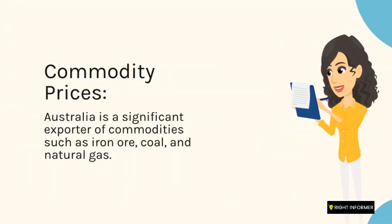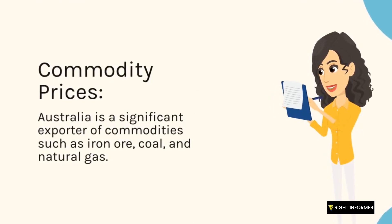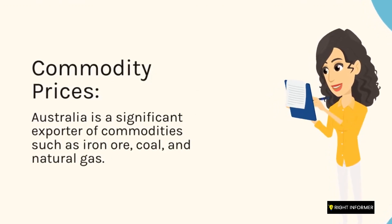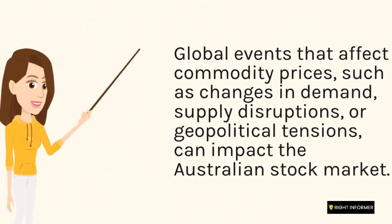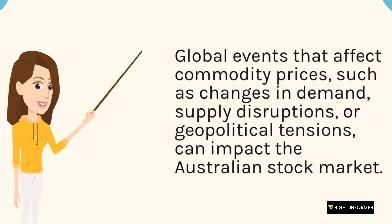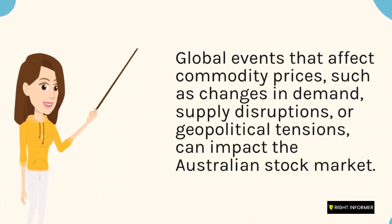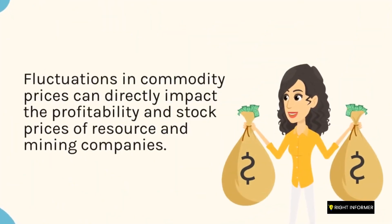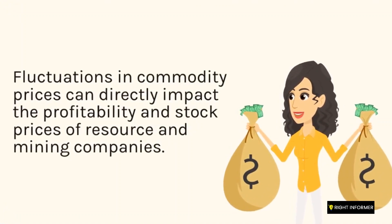Commodity Prices: Australia is a significant exporter of commodities such as iron ore, coal, and natural gas. Global events that affect commodity prices, such as changes in demand, supply disruptions, or geopolitical tensions, can impact the Australian stock market. Fluctuations in commodity prices can directly impact the profitability and stock prices of resource and mining companies.